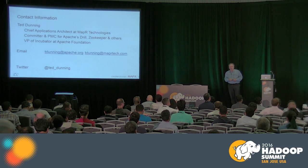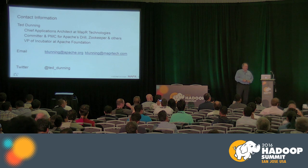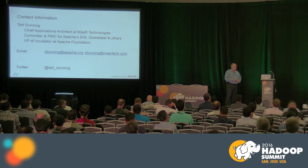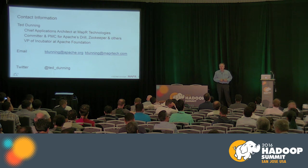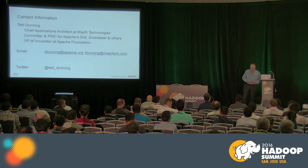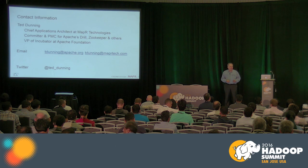I'm Ted Dunning. I'm chief application architect at MapR. I'm also a committer and PMC member on a bunch of Apache projects. I'm also VP of Incubator right now, whose primary job is to keep people calm and keep things incubating. We have about 55 or 56 projects incubating at Apache right now, so the number of new projects at Apache is still going to go up. You can get to me by email, by Twitter, or any kind of mechanism you like.